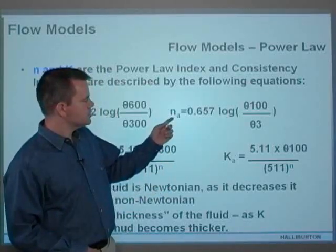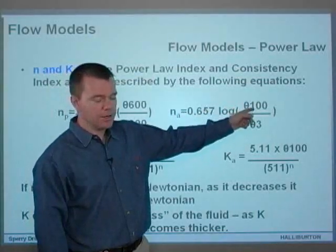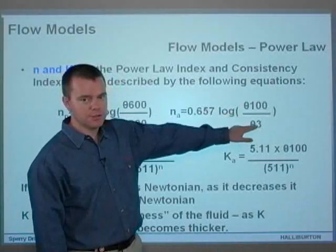Now, in the annulus, n_a equals 0.657 log θ100 over θ3. So again, using lower shear rate values here.